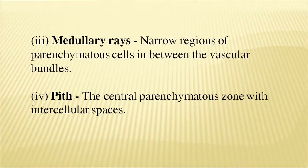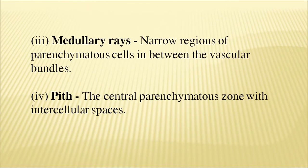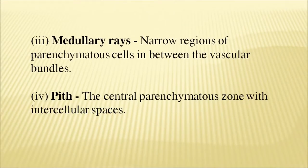The medullary rays are the narrow margin of parenchymatous cells between the vascular bundles. Going back to the slide, you can see there are two bundles and in between there is a layer of normal parenchymatous cells separating the two bundles — this is called a medullary ray. Last is the pith: the central parenchymatous zone with intercellular spaces, made of loosely packed cells, not hard-packed.